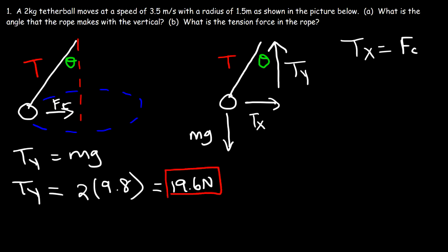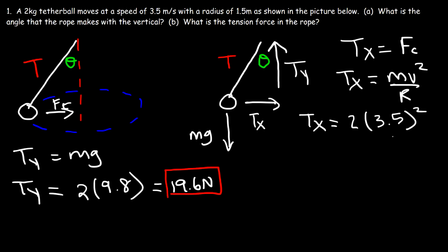Tx is equal to the centripetal force, and we know the centripetal force is mv² divided by r. So Tx equals the mass of 2 kilograms times the speed of 3.5 meters per second squared — that's the speed being squared, not units of acceleration — divided by the radius of 1.5 meters. So Tx is about 16.33 newtons.